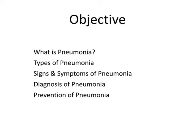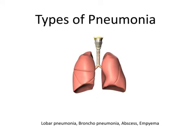Now let's look at the classification of pneumonia. The first type is lobar pneumonia, where one lobe of the lungs is affected. The second type is bronchopneumonia, where many areas of both lungs are affected. In some cases, a large collection of fluid and pus called an abscess may form inside one of the lungs, and when it forms around the outside of the lungs it is called an empyema. You can make out this pink coloured patch on the lung which represents an empyema.